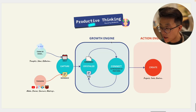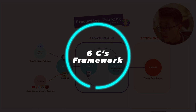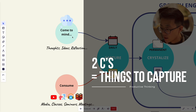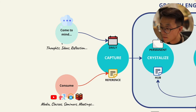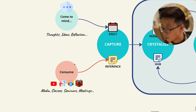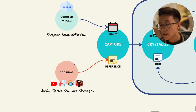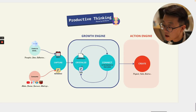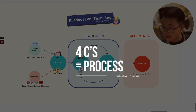To help you remember this framework, there are six C's. The first two C's are about what you want to capture. First are the things that come to your mind — thoughts, ideas, or anything you want to put somewhere — and you put them in daily notes. Second is the information you consume, which could be anything: media, classes, meetings — anything you can trace back to a source. You capture those onto reference notes. The other four C's make up the process itself.